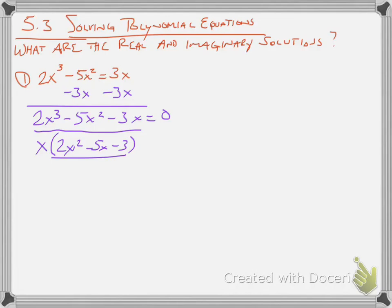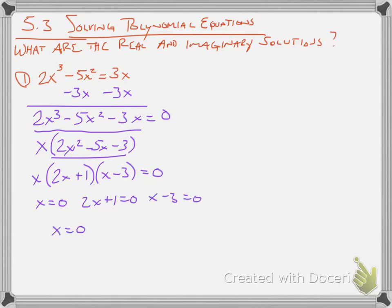Go ahead and see if you can factor that polynomial — pause it for a second. And it does factor; it factors into 2x plus 1 times x minus 3. So then I have x equal to 0, 2x plus 1 equal to 0, and x minus 3 equal to 0. So I have x equal to 0, negative one-half, and positive 3.